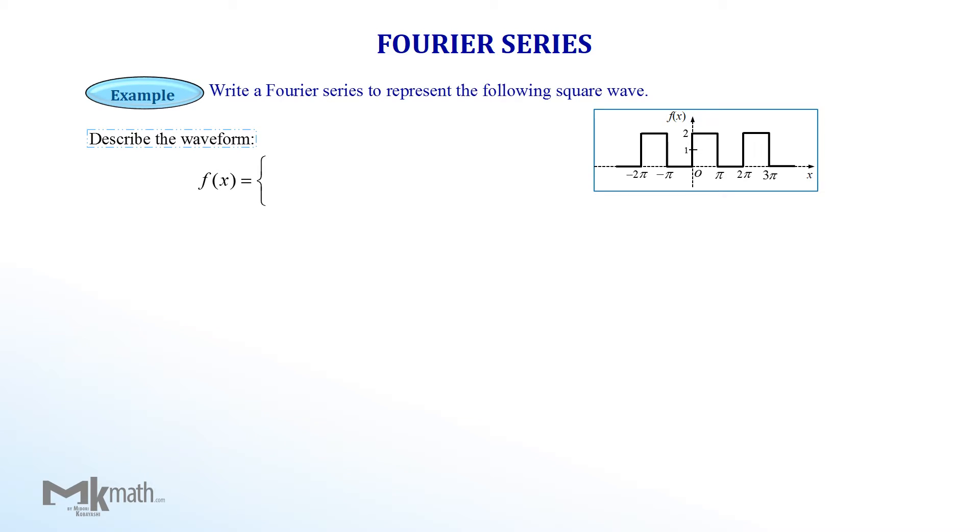Next, we need to define the function based on the picture, ignoring the vertical lines. We just need to define it over one cycle, minus pi to positive pi or 0 to 2 pi depending on the shape of graphs. Now we can see the function y equals 0 for the interval from minus pi to 0, and another function y equals 2 for the interval from 0 to pi.